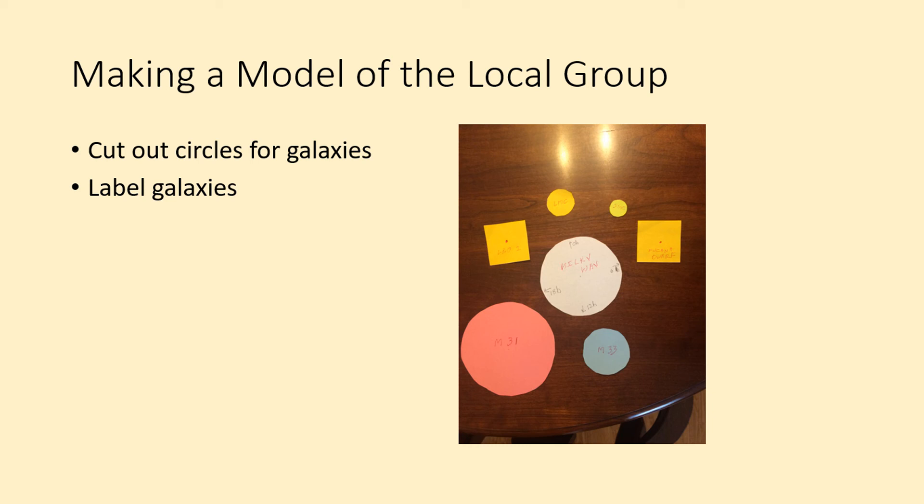To lay out your model, start by putting the Milky Way in the center of the room. We'll use the right ascension data to determine which direction to put the other galaxies in. Pick one direction and call that zero hours. Then the opposite side will be 12 hours.